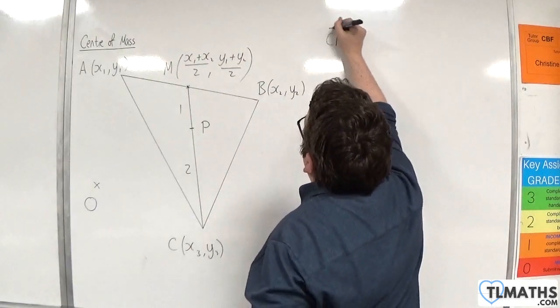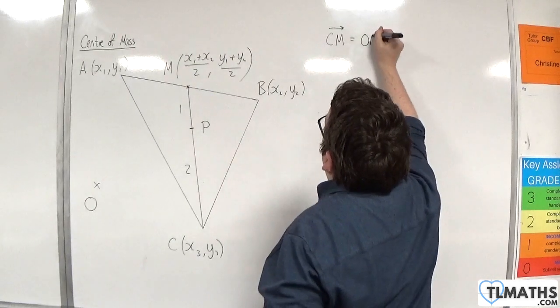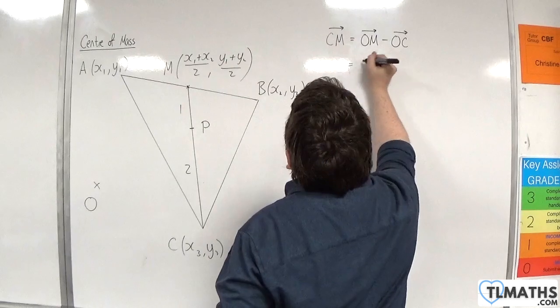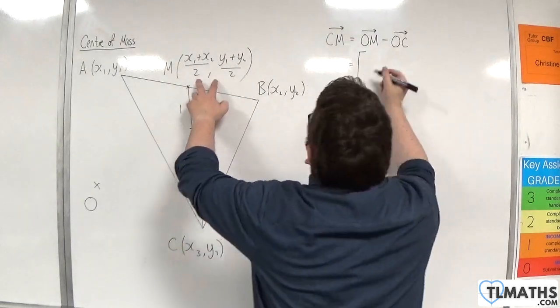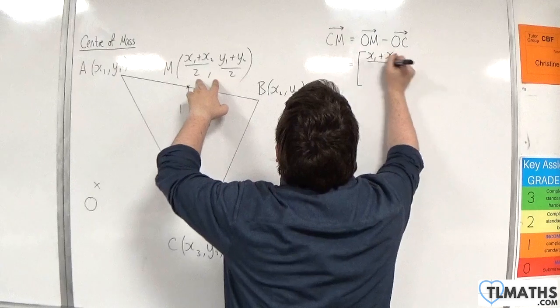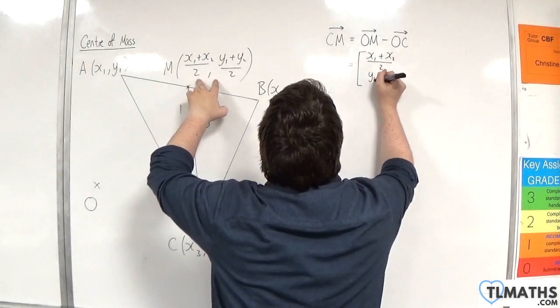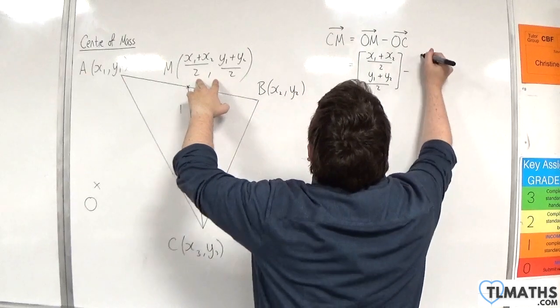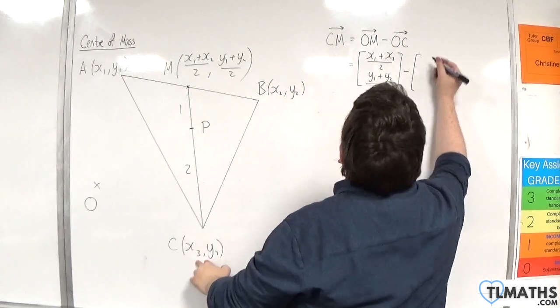So, the vector CM is OM minus OC. Now, OM is X1 plus X2 over 2, Y1 plus Y2 over 2. And OC is X3, Y3.